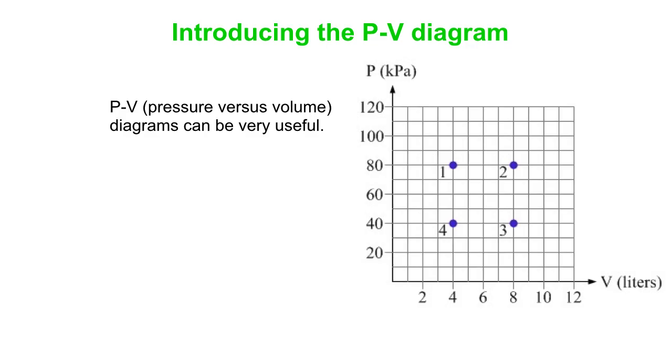And if you plot the transition from one state to another, or you just plot on there a particular state, you can actually get some useful information about that. So here we have a PV diagram with states 1, 2, 3, and 4 marked on it.